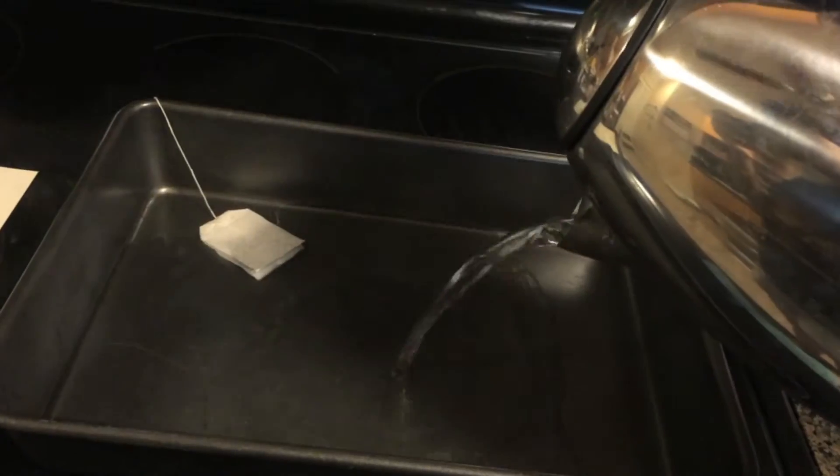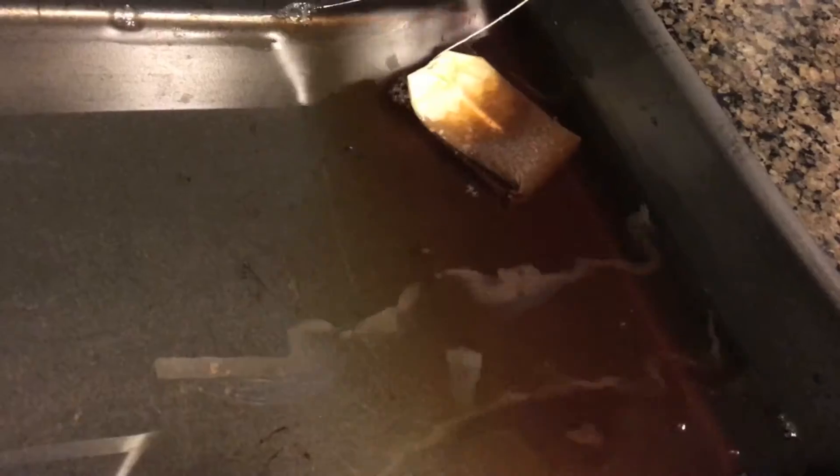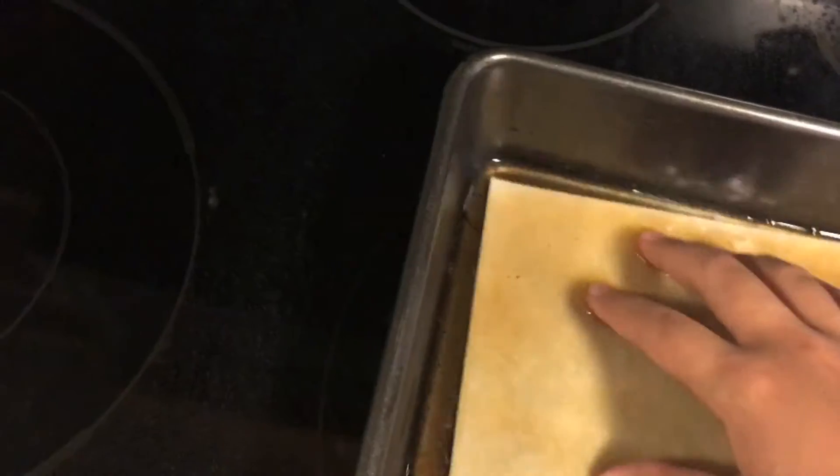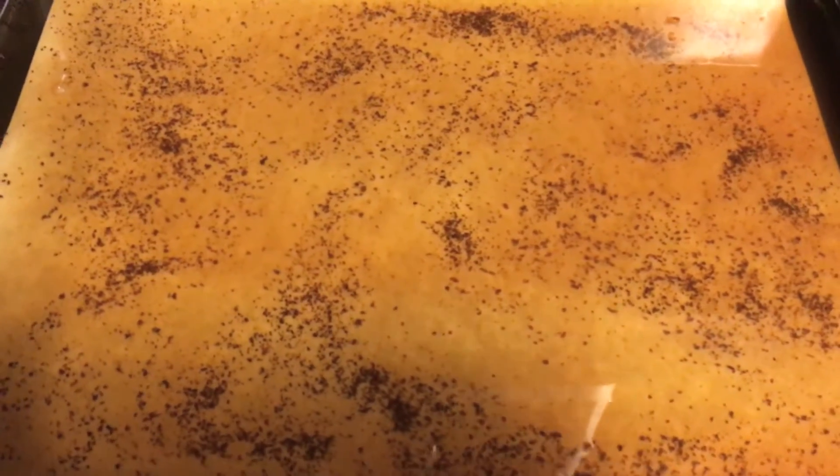Now make some tea and put it in the pen and slosh it around until you get a brown you are happy with. Submerge the page completely. I actually got impatient and broke open my tea bag.